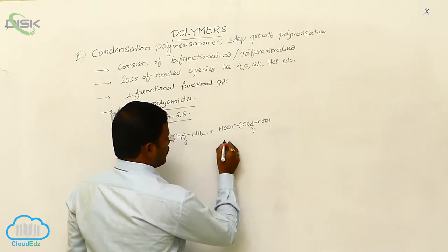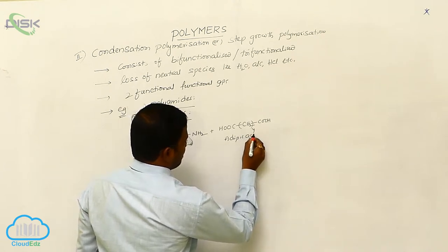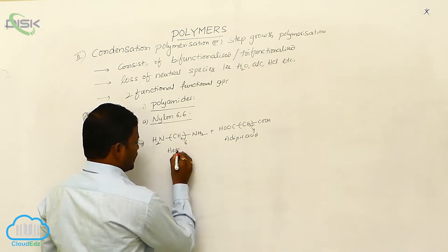So this is here. What is the name of the compound? Adipic acid. And here is hexamethylene diamine.